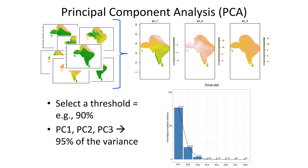The other way is to use a principal component analysis. This analysis is a dimensionality reduction method that's often used to reduce the dimensionality of large data sets. And here, as you see, creating or selecting a threshold, for example, here, 90% of variation. So in this case, he got the first three principal components with 95% of variance.